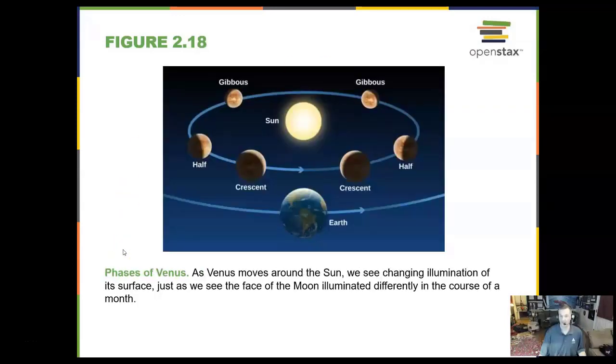We can also see the phases of Venus. Venus does go through phases, but it's not quite the same as what the moon goes through, but it's similar. And we can see this by looking at Venus in a telescope in the night sky or the early morning or early evening hours. And you can see a little bit or a lot lit up depending on what phase it's in.